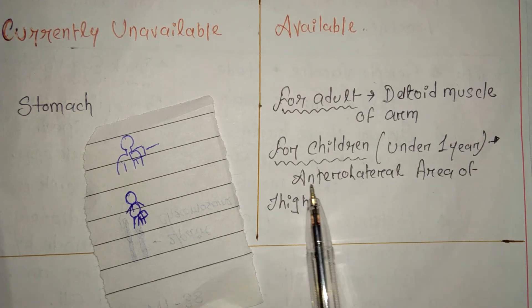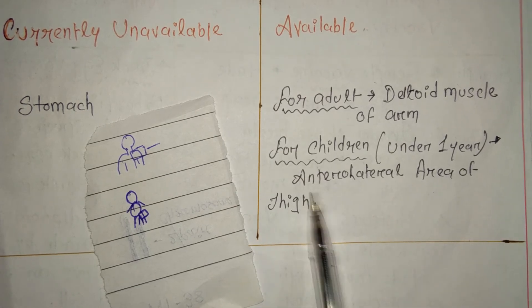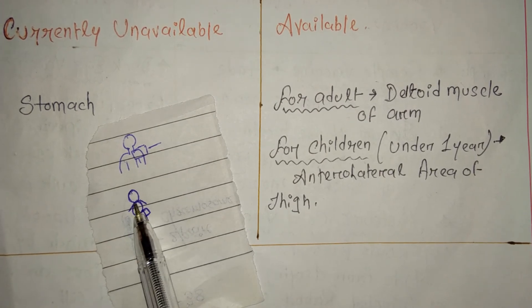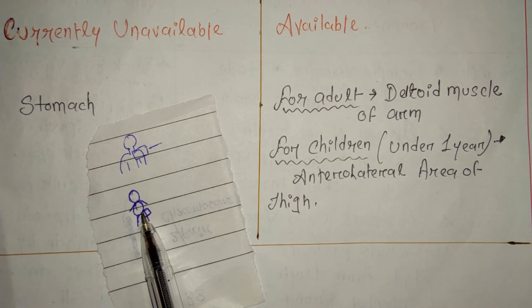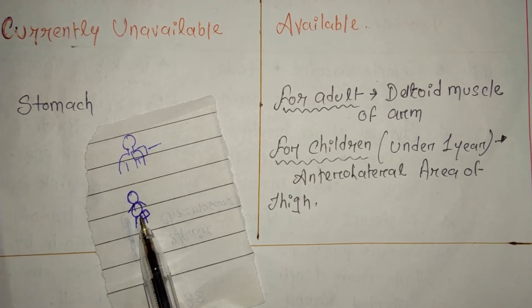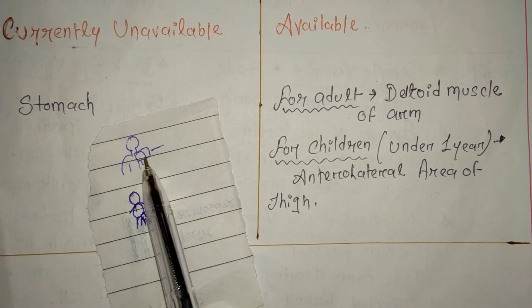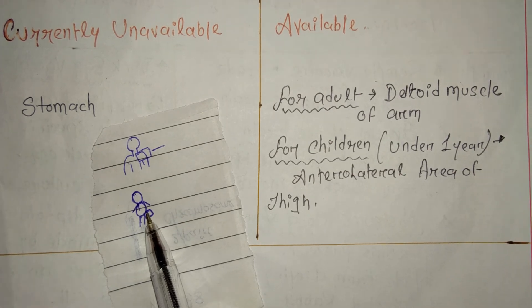For children under one year, the vaccine is given in the anterolateral area of the thigh. Imagine the child's thigh — the front and outer side of the thigh is the anterolateral area, and that is where the injection is given. So to summarize: for adults, deltoid muscle; for children, anterolateral side of the thigh.